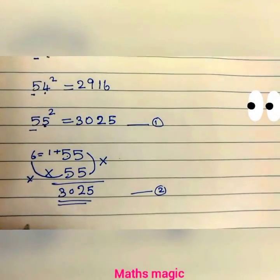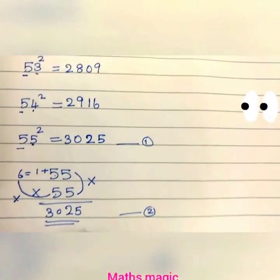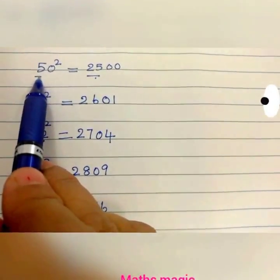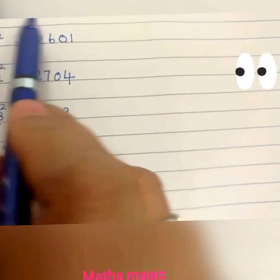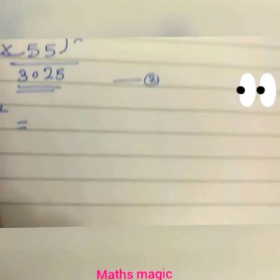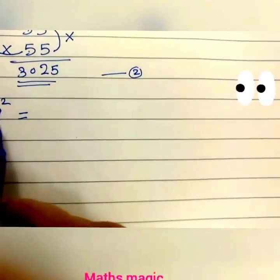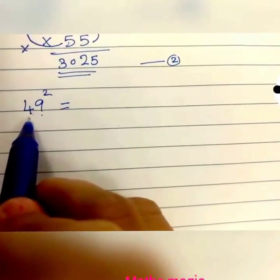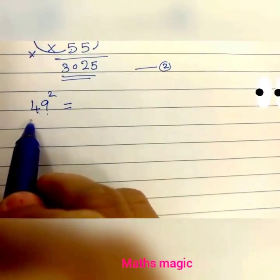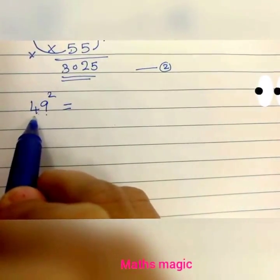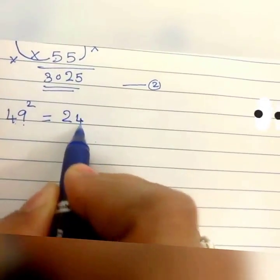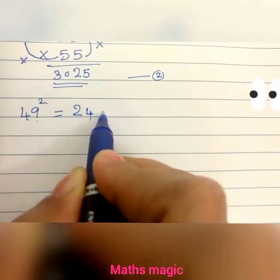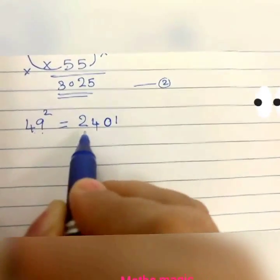Now let us consider numbers less than 50. For 49 squared, we know 50 squared is 2500, so 5 squared is 25. Since 50 minus 1 is 49, we subtract 1 from 25: 25 minus 1 is 24. We have subtracted 1, so we take the square of 1, which is 1, written as 2 digits: 01. So 49 squared is 2401.